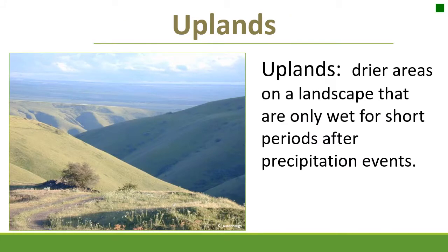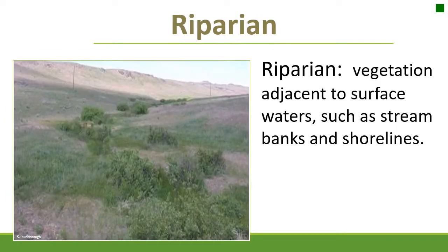Uplands are those drier areas that only maintain a lot of moisture in their soil immediately after precipitation events. Riparian areas are those areas adjacent to bodies of water that have higher vegetation levels than the surrounding areas. They're often at a lower elevation and are very important for maintaining stream health, which we'll cover later.